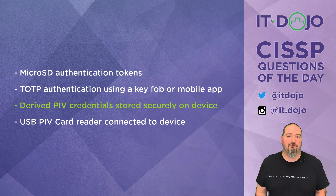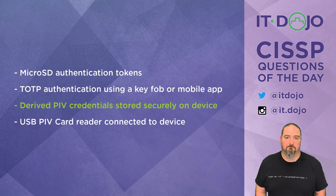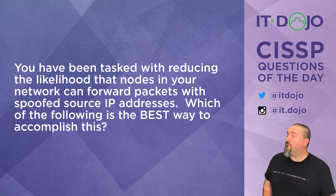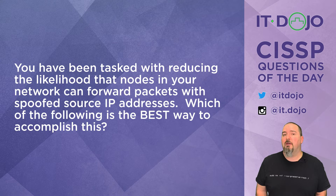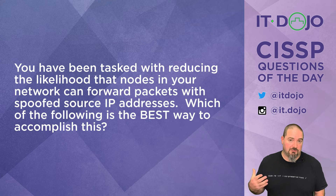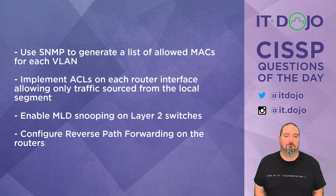With the CISSP, pick the best answer, not just a correct answer — that's typically how the exam works. Moving on to question number two: you have been tasked with reducing the likelihood that nodes in your network can generate or forward packets with spoofed source IP addresses. Which of these answer choices is the best way to accomplish that?